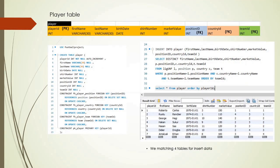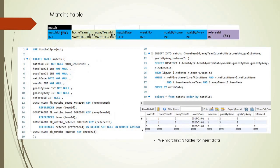The next table is the player table. It has many attributes about a player. Player ID is the primary key, and position ID, country ID, and team ID are selected as foreign keys. We used four tables in the INSERT INTO query. The other table is the match table — it contains information about each match, with match ID as the primary key and three foreign keys. We use three tables to get the required data.